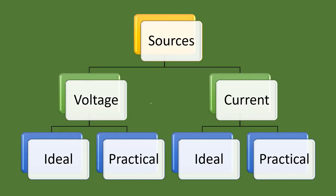Basically, sources are of two kinds: voltage source and current source. We use voltage sources more often than current sources, but there are circuits where analyzing using a current source is much easier. Both voltage and current sources can be either ideal or practical. We don't see any ideal sources in reality, but to understand basic circuit concepts we need to treat them as ideal. When using them in real life, we consider them as practical sources.